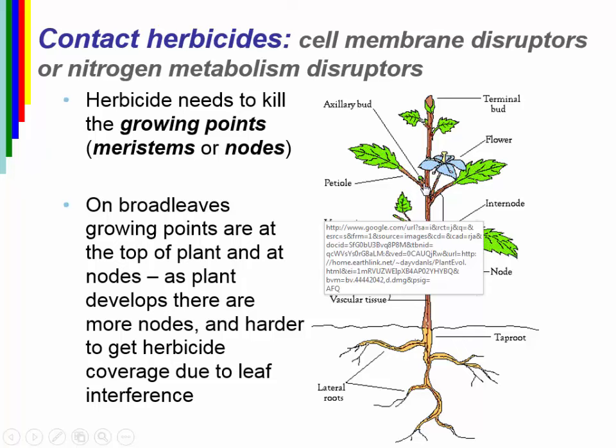Most contact herbicides are relatively fast-acting — within days we start to see activity. With contact herbicides, coverage is important not just on the leaves but also on the meristems in the axils where the petiole attaches to the stem. Those axillary buds give rise to new leaves and stems, and if not effectively killed, they'll often regrow. The larger the plant, the more difficult complete coverage becomes.